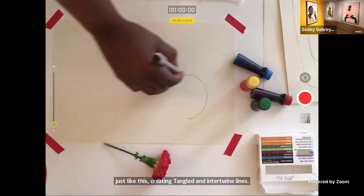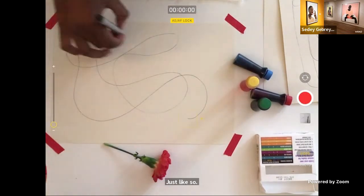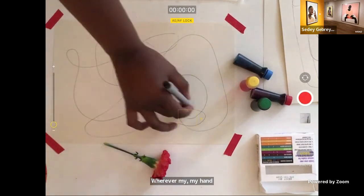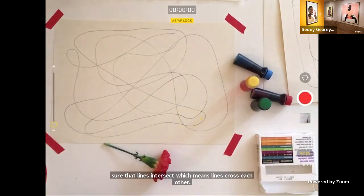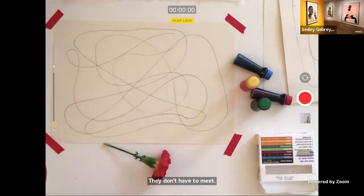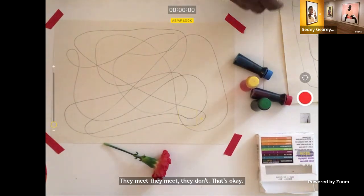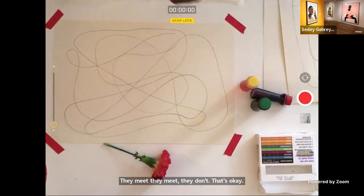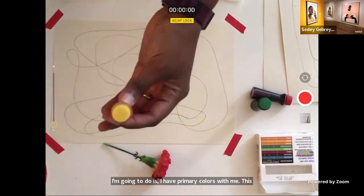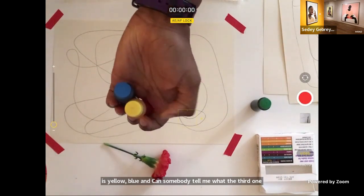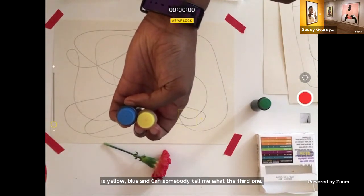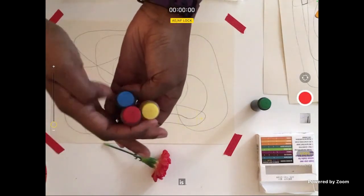Just like so. Wherever my hand leaves me, there I'll go. I'll make sure that lines intersect, which means lines cross each other. They don't have to meet. They meet, they don't, that's okay. All right. Next thing I'm going to do is I have primary colors with me. This is yellow, blue. And can somebody tell me what the third one is? Red from Lily. Red. That's right.